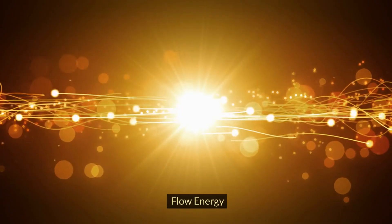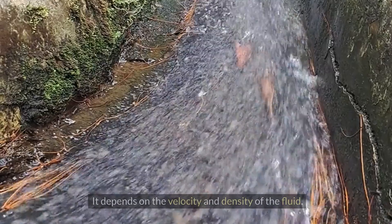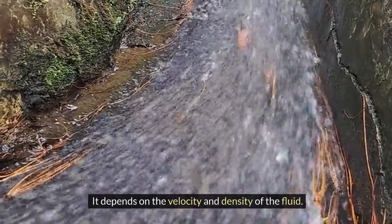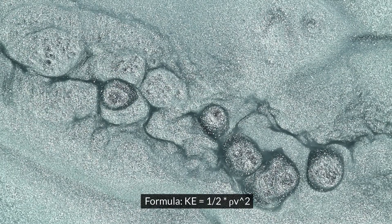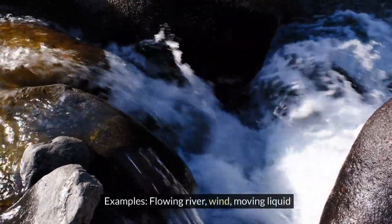Flow energy: energy generated by the flow of a fluid. It depends on the velocity and density of the fluid. Formula: K equals half rho v squared. Examples: flowing river, wind, moving liquid.